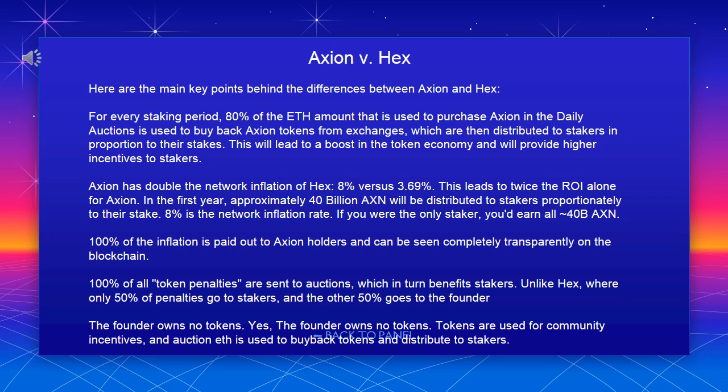100% of all token penalties are sent to auctions, which in turn benefits stakers. Unlike Hex, where only 50% of penalties go to stakers and the other 50% goes to the founder, the Axion founder owns no tokens. Tokens are used for community incentives, and auction fees are used to buy back tokens and distribute to stakers.